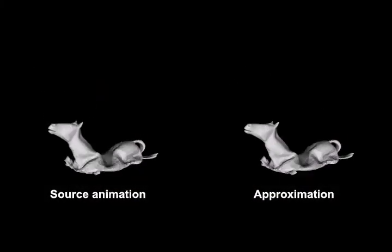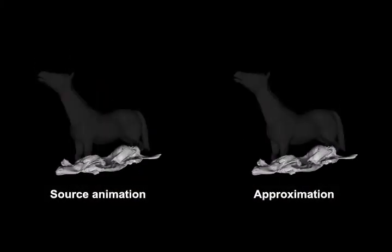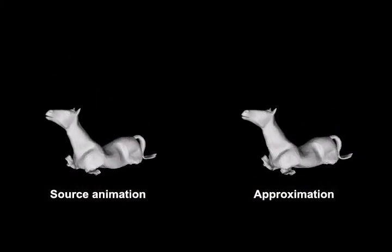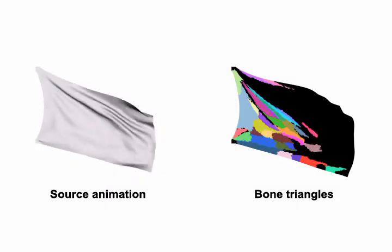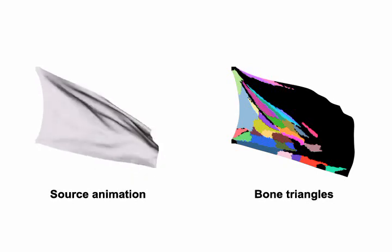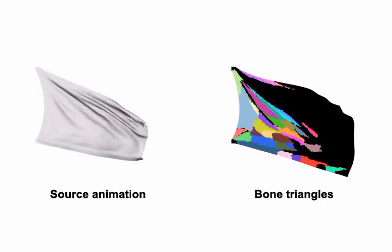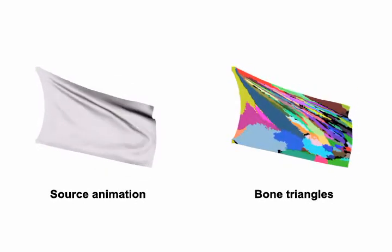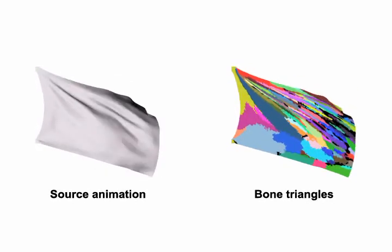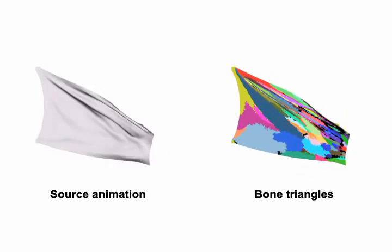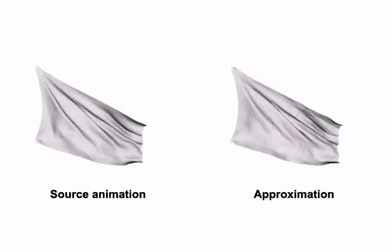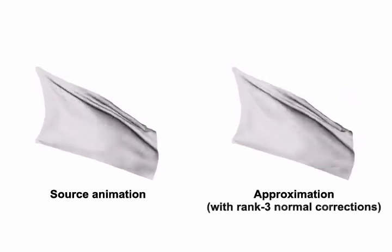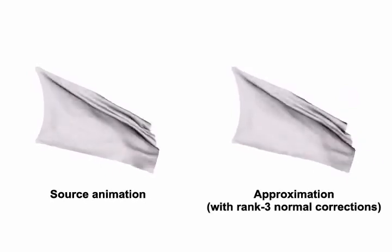While our approach is best suited to quasi-articulated motions, it can accommodate highly deformable models such as this collapsing cloth horse. However, in general, the lack of near-rigid structure can make skinning less reliable and convergence less impressive. Adding more bones helps skin highly deformable models, such as a flag blowing in the wind; however, the resulting approximation can be non-smooth. Adding normal corrections can help.